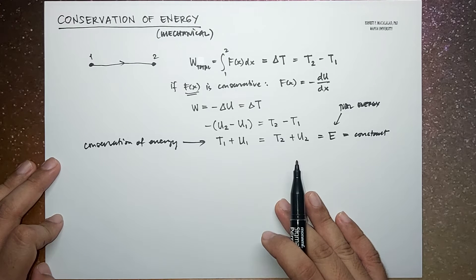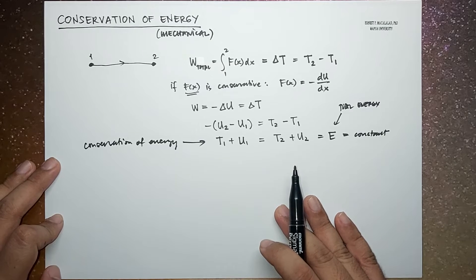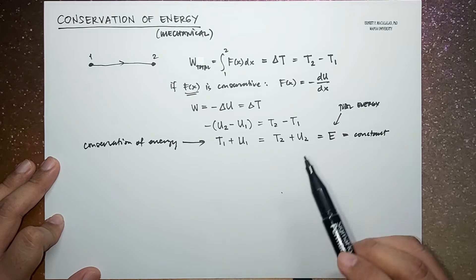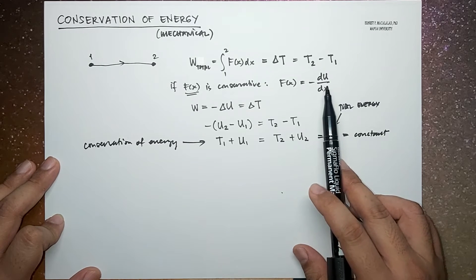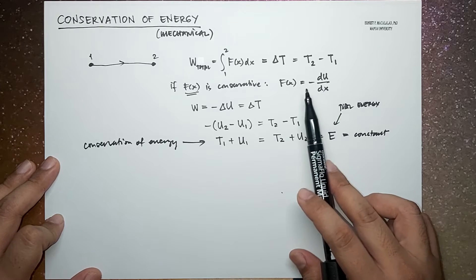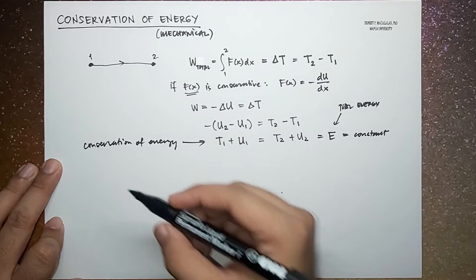stems from the fact that the force involved is only a function of position X of the particle and consequently can be derived from a corresponding potential energy U, which is a function of X. So that's why it's called conservative force.